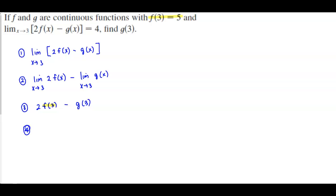So that means this becomes 2 times 5 minus g(3). So 2 times 5 is 10 minus g(3).